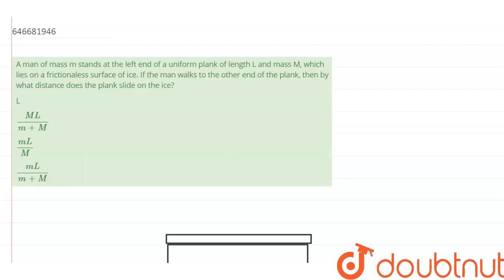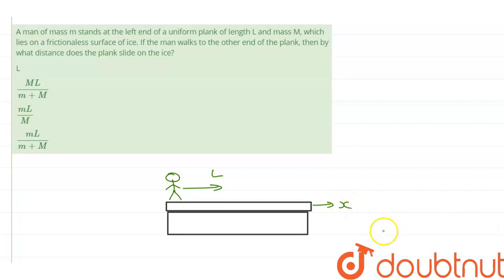So let's say this is our man. And he walks the length of the plank, that is L. And this plank, because it's on ice, there is no friction. And therefore, this plank displaces by some distance, x.